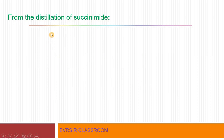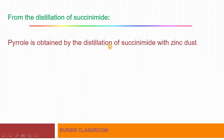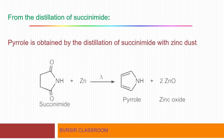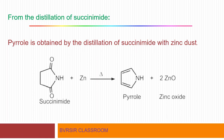Another method is from the distillation of succinamide. Succinamide distillation with zinc dust gives pyrrole plus zinc oxide. This is a convenient method.